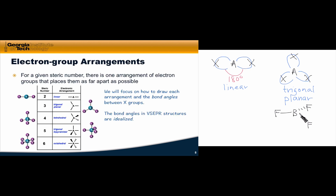Before we dive into that survey, it's worth remarking again that for a given steric number, there's only one way to put the electron groups as far apart as possible. For each of these electron group arrangements, we're going to focus on how to draw each arrangement and the bond angles between the AX bonds within each structure.